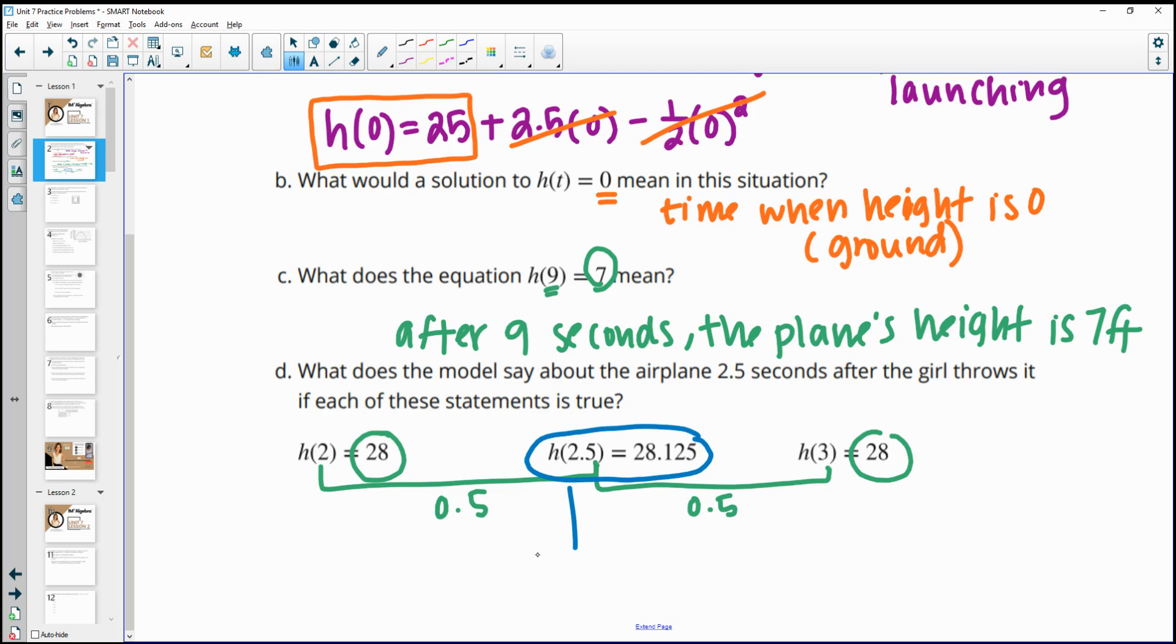So this tells us that at 2.5 seconds, the plane is at the max height, and that that max height is 28.125.